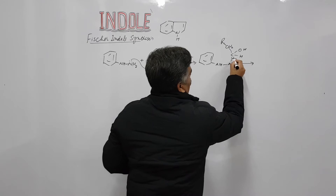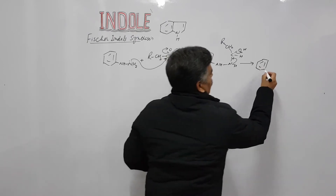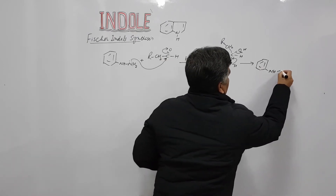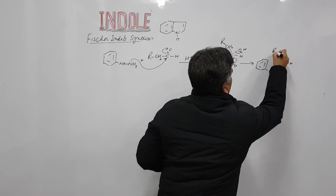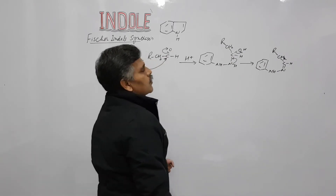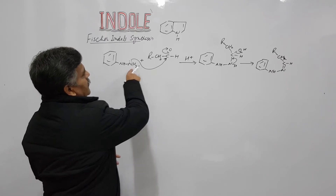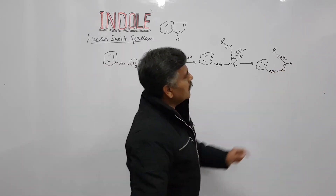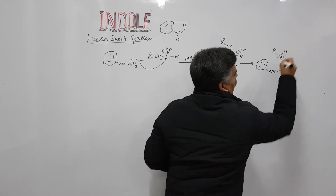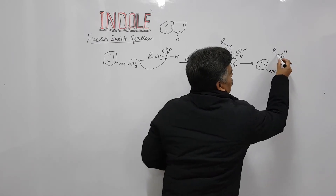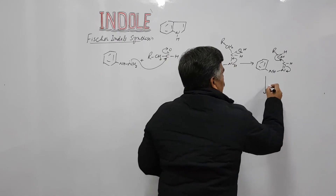This gives hydrazone formation: Ph-NH-N=CH-CH2R. Hydrazones are formed by the reaction of phenylhydrazine with carbonyl compounds, giving a carbon-nitrogen double bond. One of the hydrogens from this carbon is then shifted to this nitrogen — this is tautomerization.